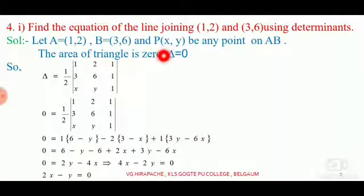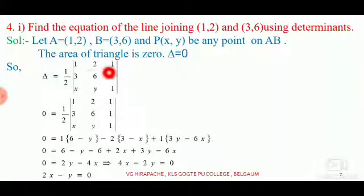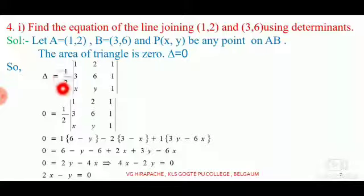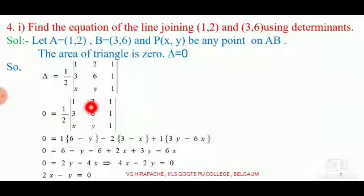We should find the equation of the line joining two points. Let point P(x, y) be any point on AB. Since the given three points are in a line, the area of the triangle is equal to 0. Therefore delta equals 0. So applying the determinant formula, delta equals 1/2 times the determinant with first row (1, 2, 1), second row (3, 6, 1), third row (x, y, 1).